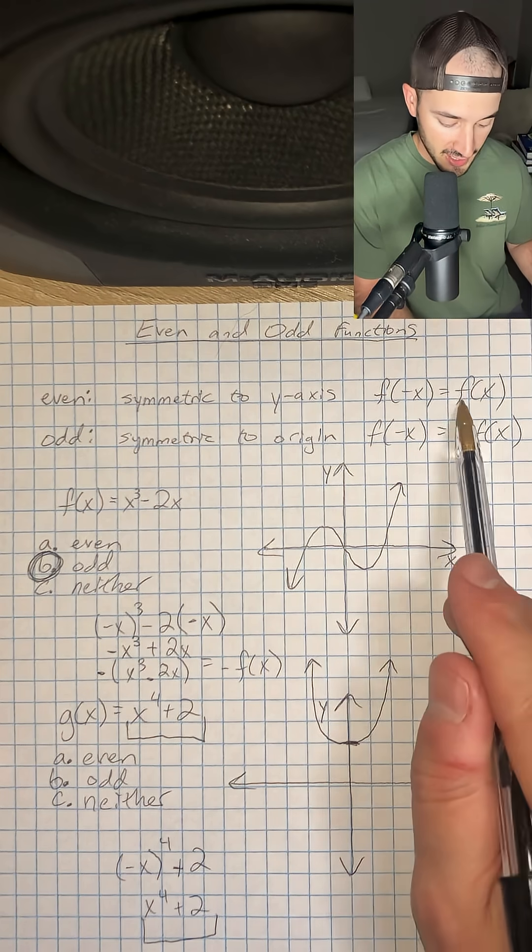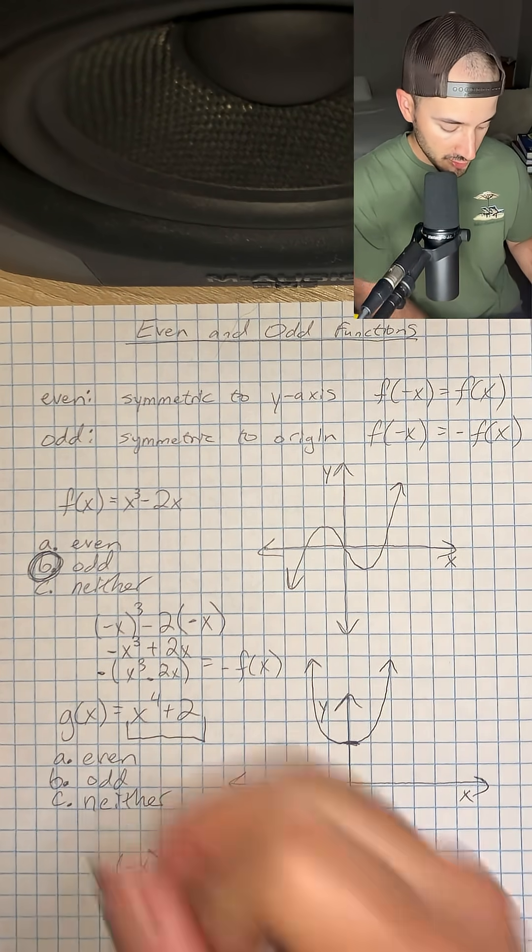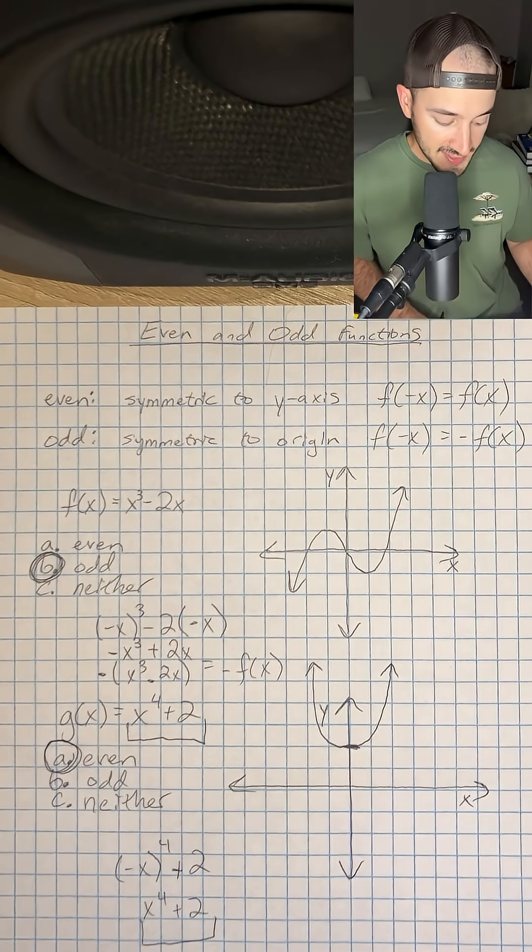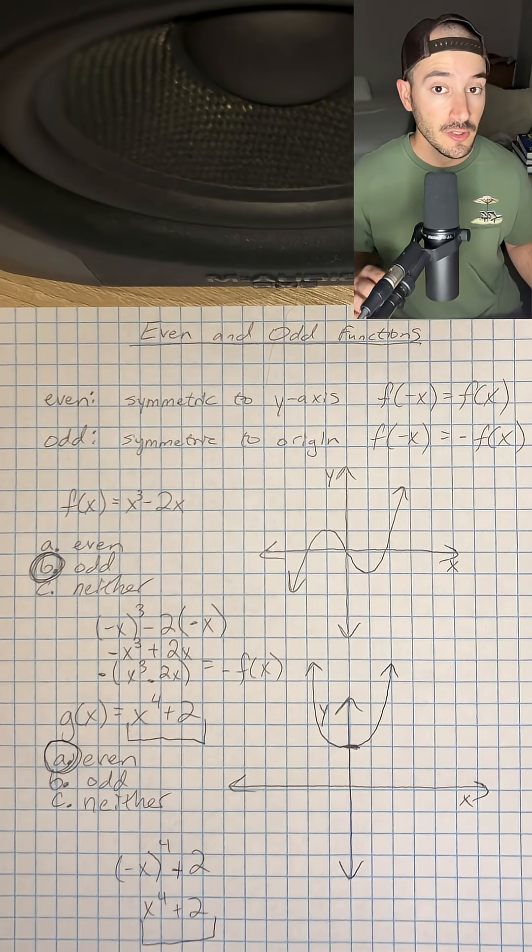We plugged in negative x and got just regular f of x. So this one is going to be even. We're going to circle letter A. And that is how you can determine from a graph and algebraically if a function is even or odd.